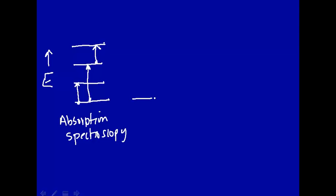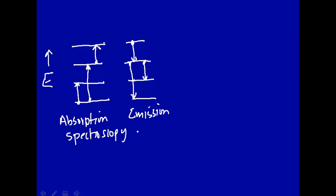We can also have the same set of energy levels, but instead of absorbing energy and going to a higher energy state, we prepare the system at a high energy state and look at the transitions to a lower energy state. In this case, energy is emitted from the system, and one can look at the light coming out. So this would be emission spectroscopy.